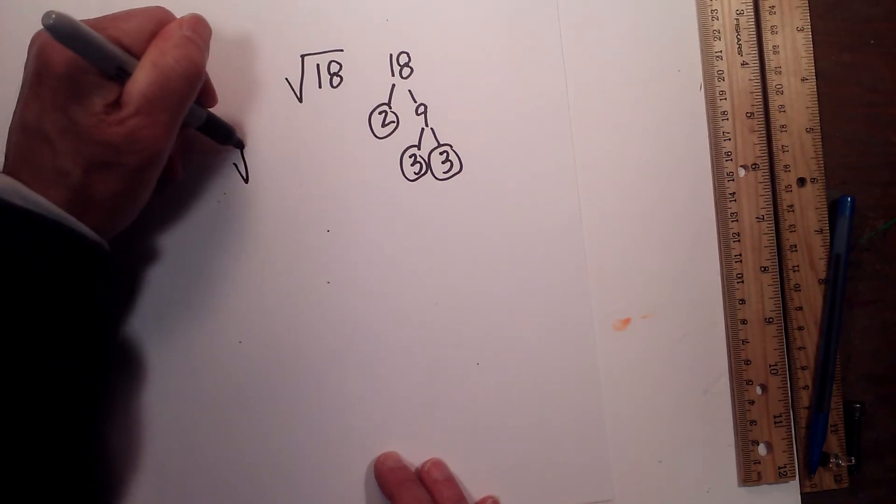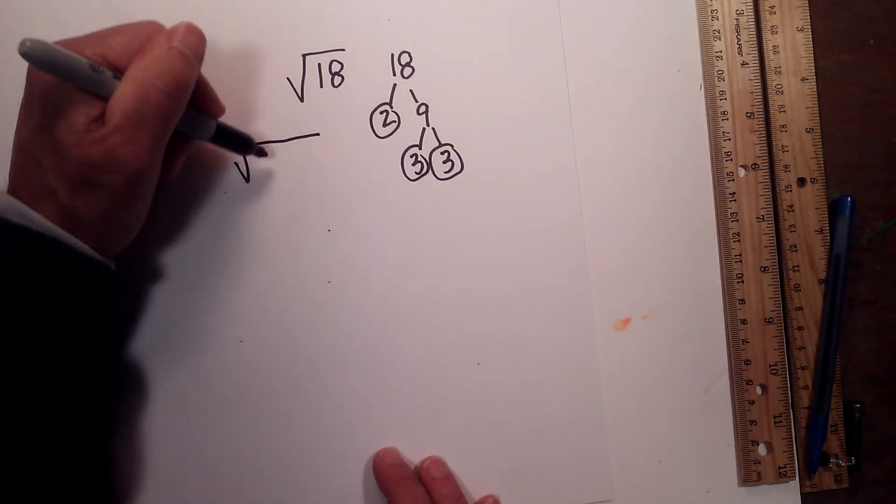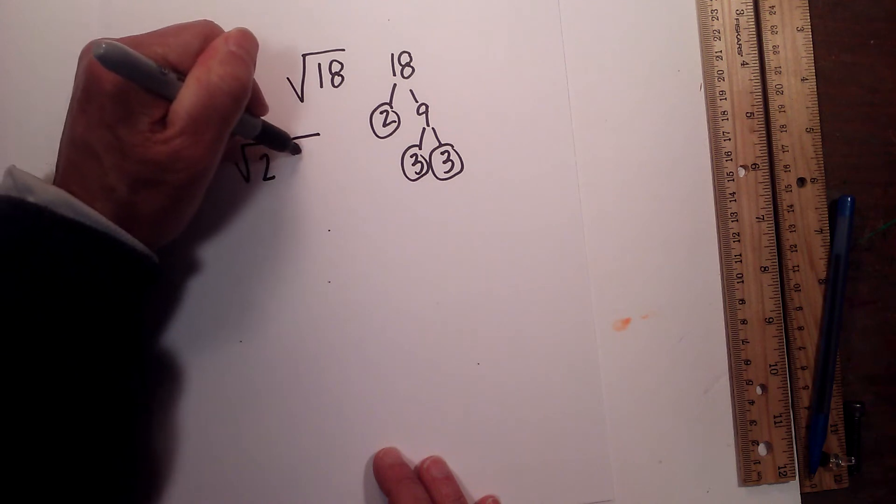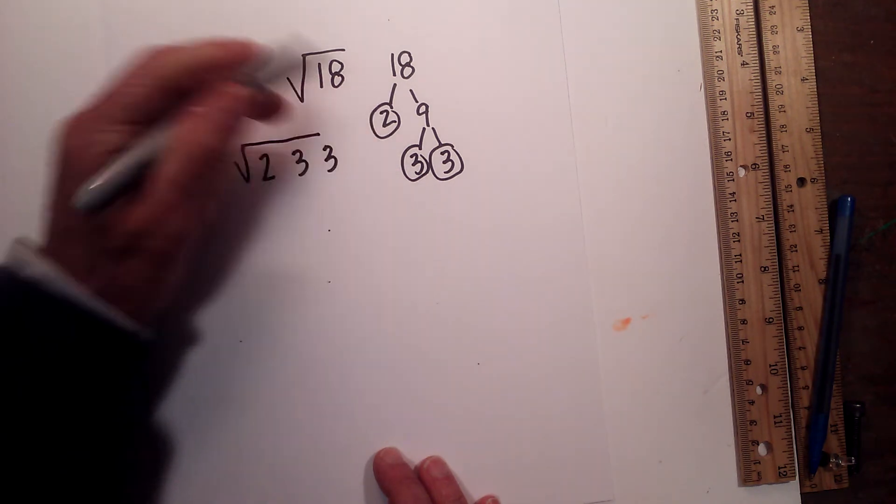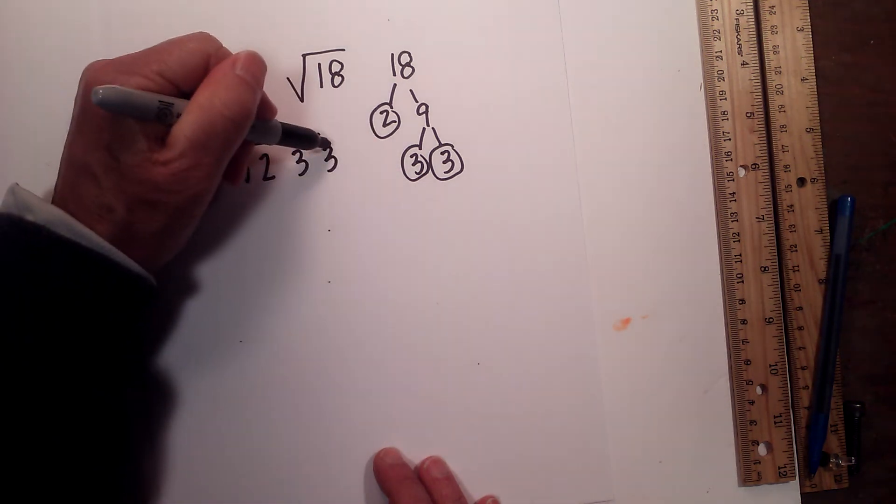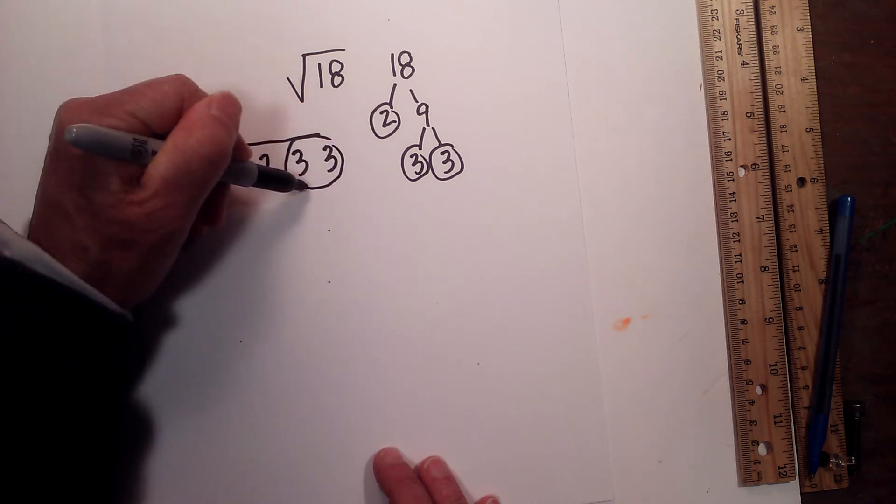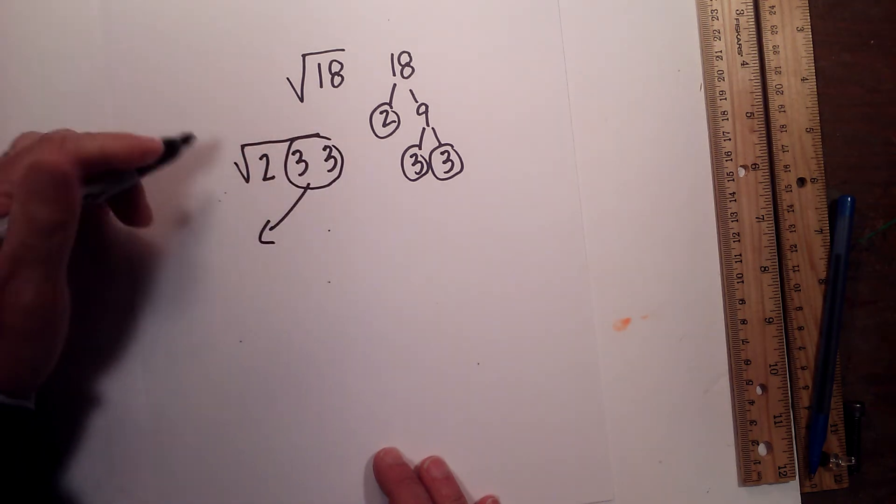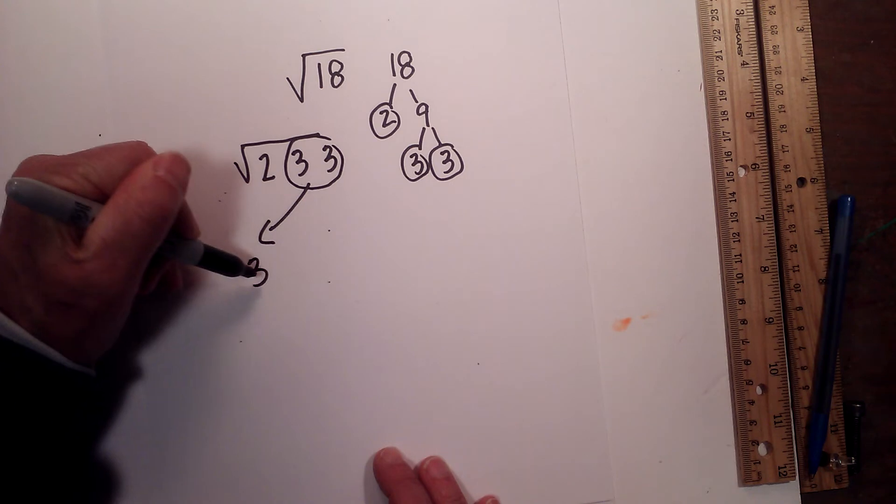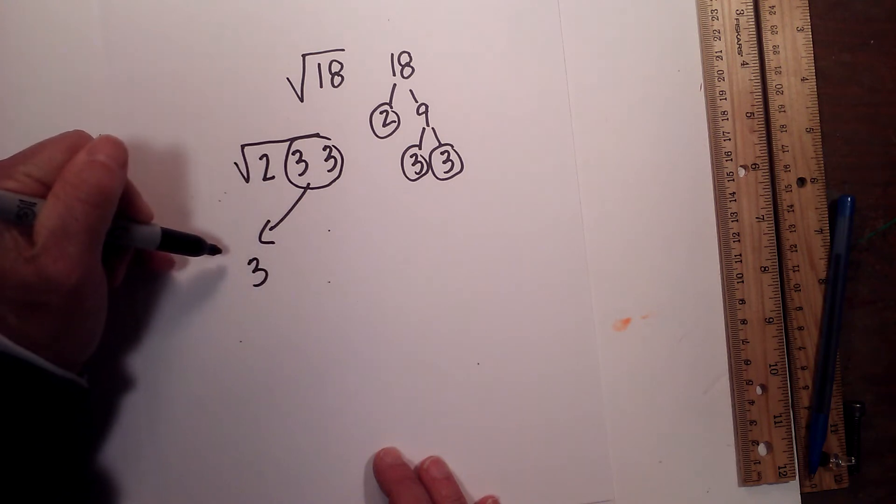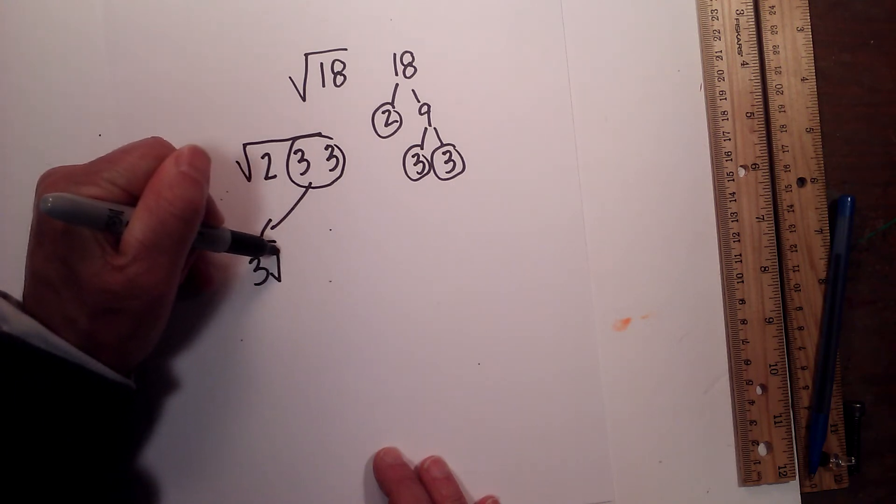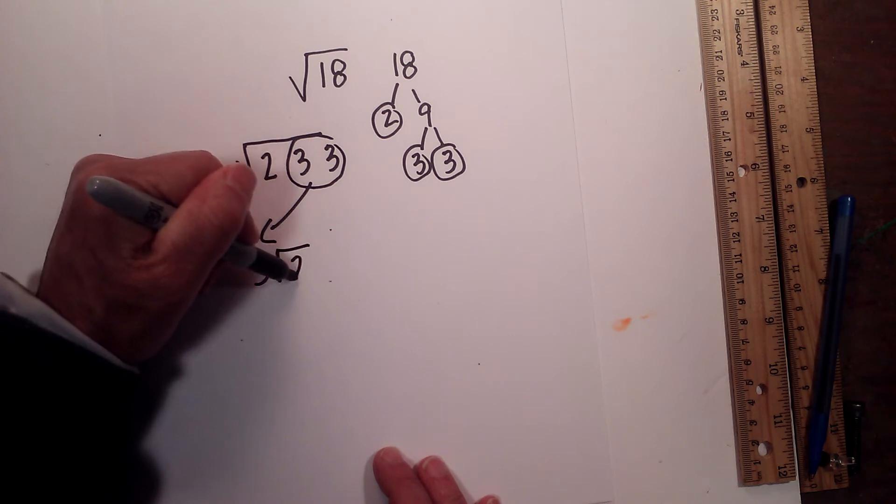So I'll rewrite the square root symbol. We have 2, 3, and 3 because that's all our prime numbers. I have one pair of 3s, so they're going to come out from under the square root symbol. So I have a 3, but the 2 is still under it. So it will be written 3 square root 2.